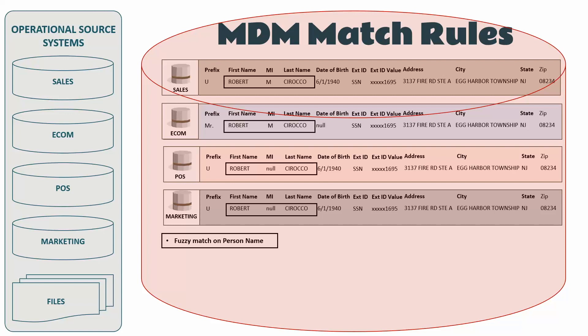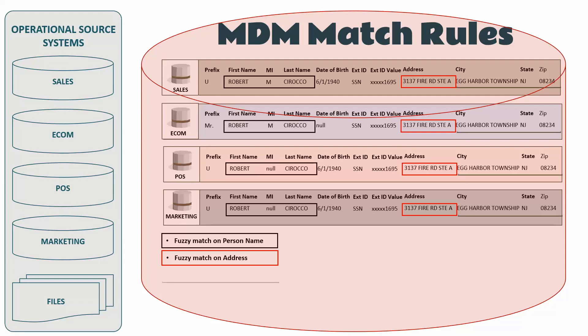Then I apply the fuzzy match on the address of all four records. If you look at the city, state, and zip, they are all the same across the four entries. For those fields, I use an exact match — exact match counts letter by letter, special character by character; everything must match. I apply the exact match rule on these three columns across all four records.